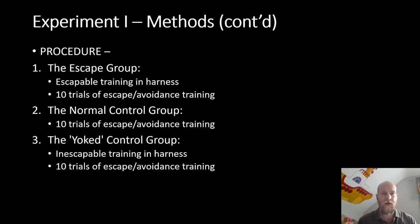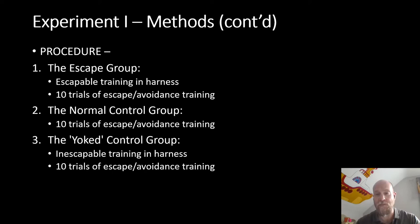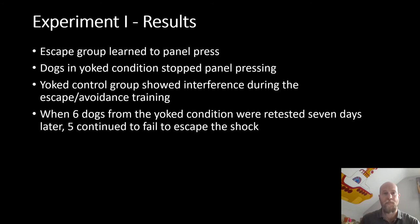In Experiment One there are three groups. The escape group undergoes escapable training in the harness and then 10 trials of escape-avoidance training in the shuttle box. The yoked control group goes through the exact same experience except the training in the harness is inescapable — triggering the panels does nothing to stop the shock, which occurs at randomized intervals consistent with what the escape group received. The normal control group receives no training in the harness at all and just does the 10 trials of escape-avoidance training.